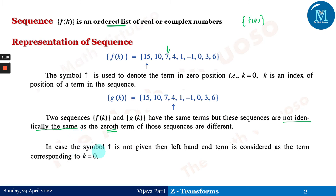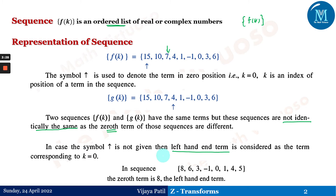In case the arrow symbol is not given, then the left-hand end term is considered as the term corresponding to k=0. That means in the sequence 8, 6, 3, since the arrow has not been given, we have to consider 8 as the 0th term, which is at the left-hand end of the particular sequence.